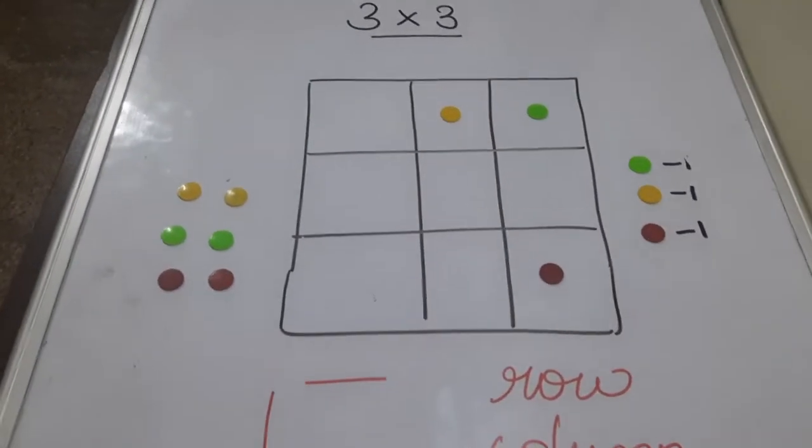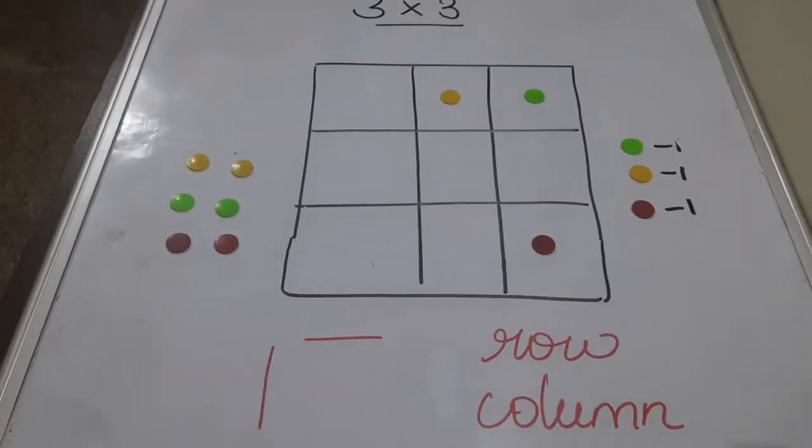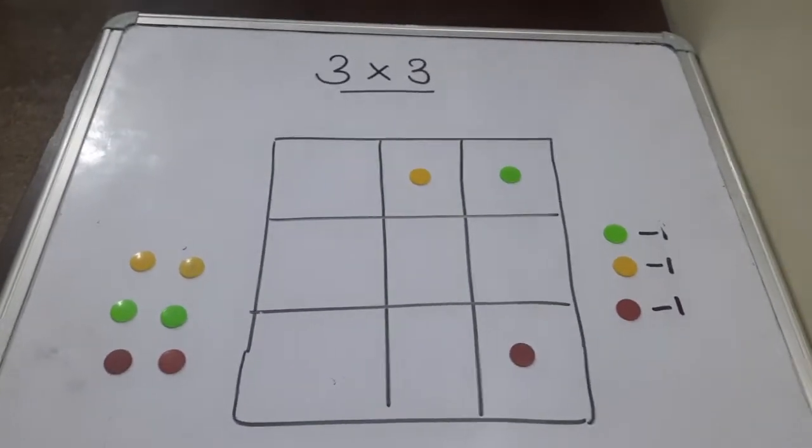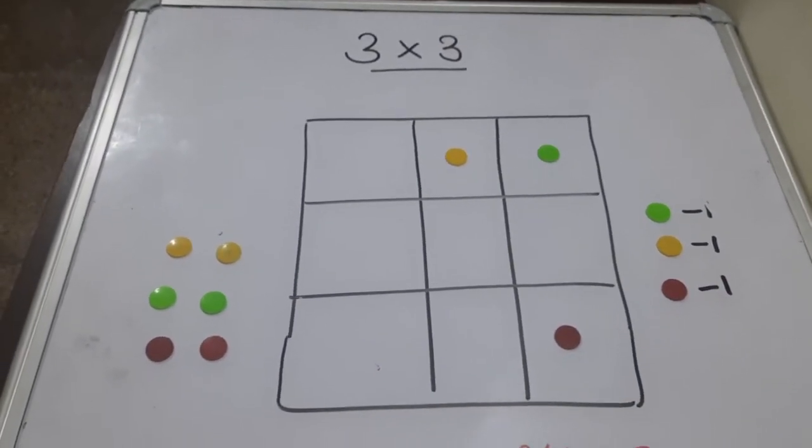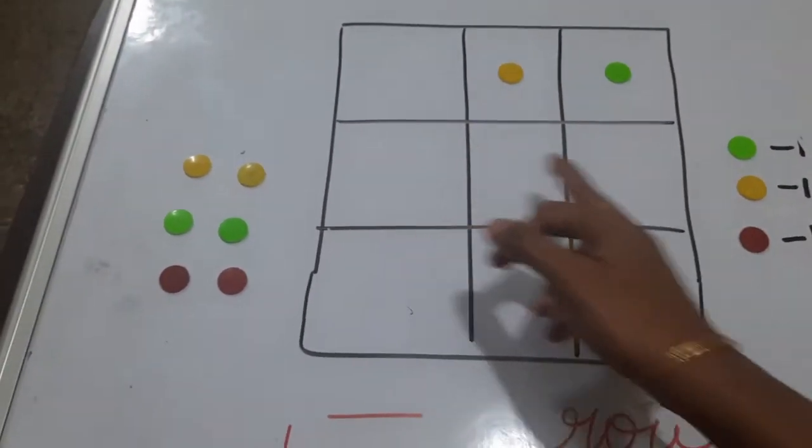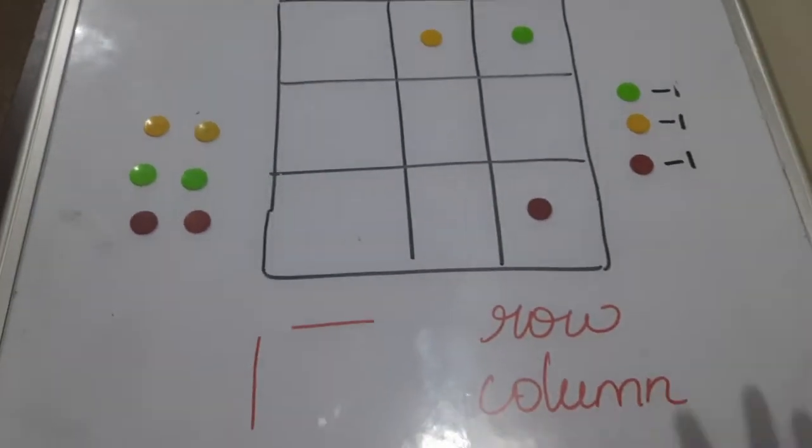So the next method I am going to introduce is row-wise column-wise. For kids under age 6 you can introduce like sleeping line and standing line, they will understand it better. In this row-wise and column-wise, take anything you want. Row-wise: this is row 1, 2, 3. Column: 1, 2, 3. Any method you can select.